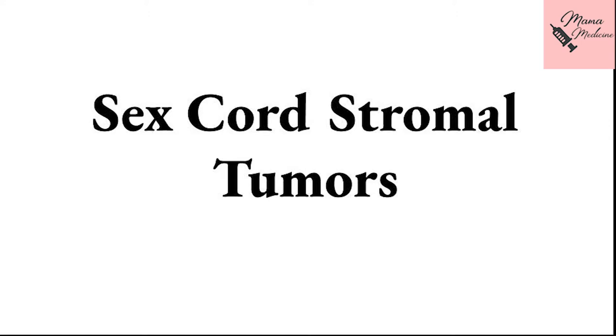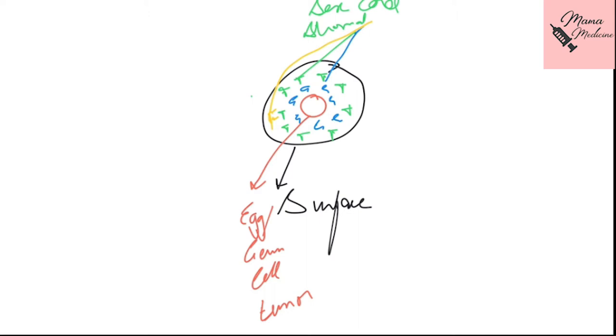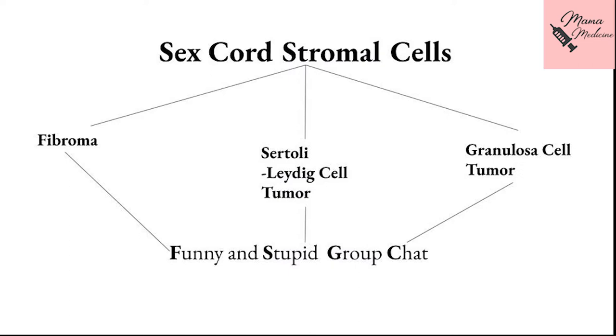Hello everyone and welcome back. In this video we will be discussing the sex cord stromal tumors, which is the last and final part of our three-video ovarian series. The sex cord stromal cells, as the name indicates, are derived from the stromal component of the ovary or the testis. The stromal part is composed of the granulosa cells, the theca cells, and the fibroblasts, as I have already demonstrated in my first video. I will link the first video at the end so you can go back and see it for yourself.